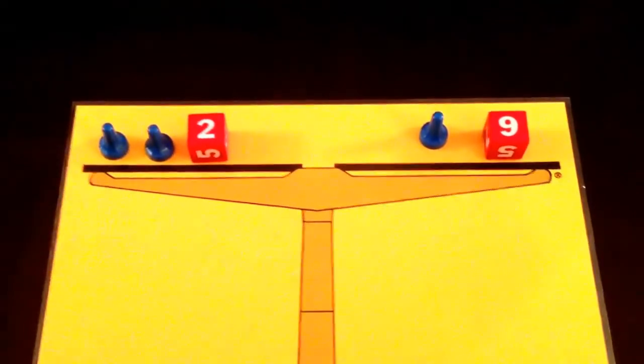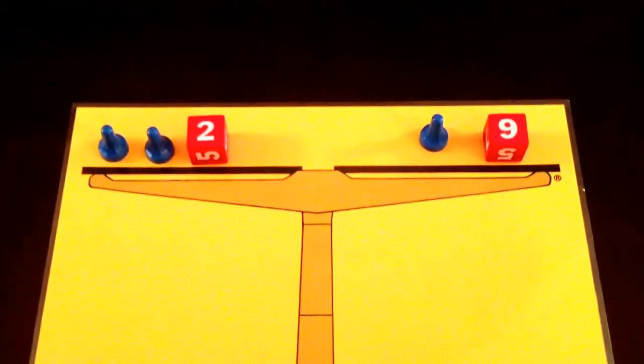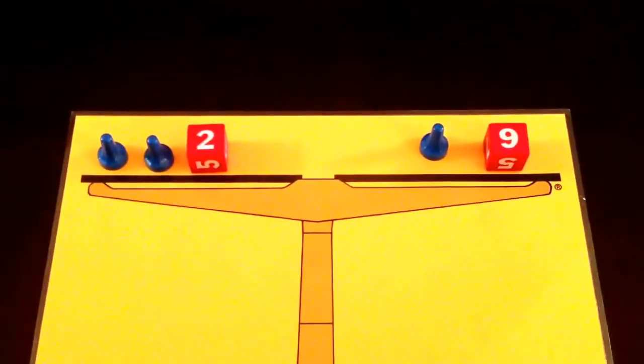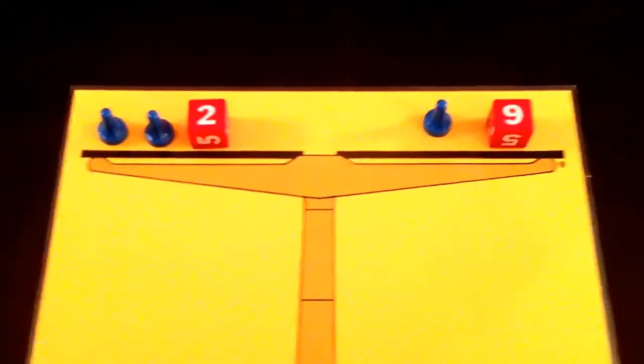And so what we just have to keep in mind is that in order for the equation to stay balanced, for it to be equal on both sides, we have to remove the same number from each side and as long as we do that then it will be balanced.